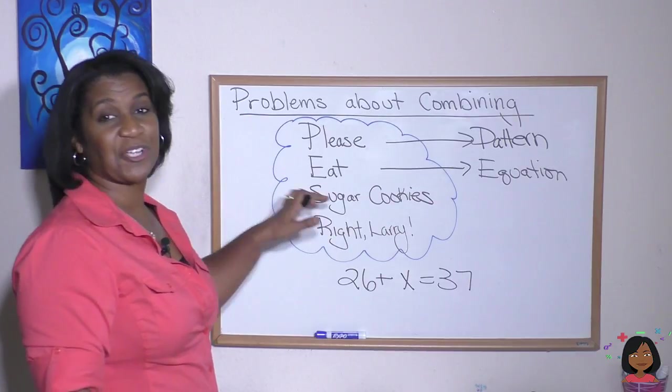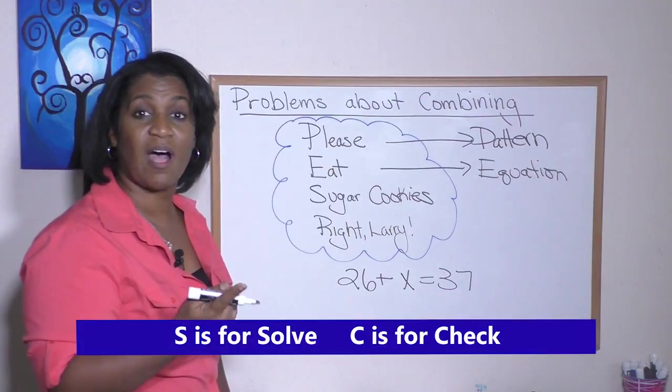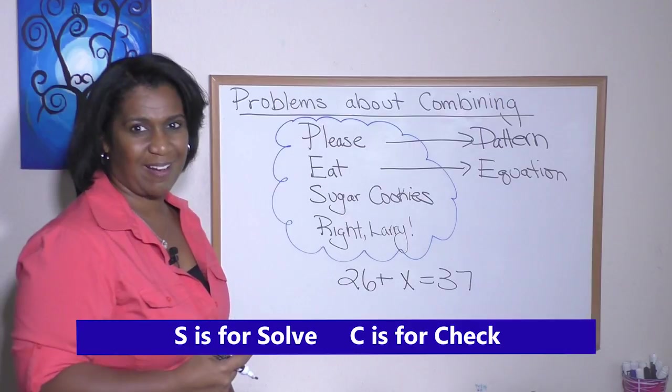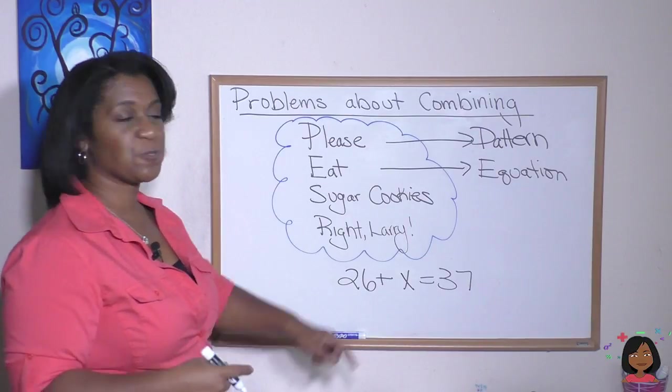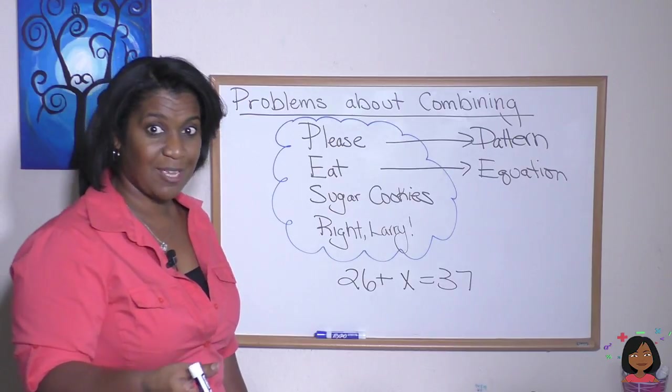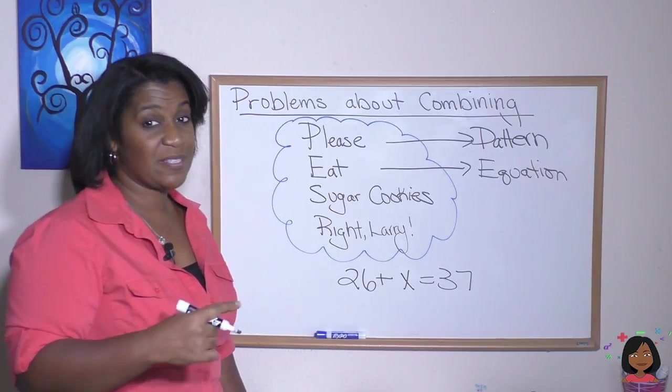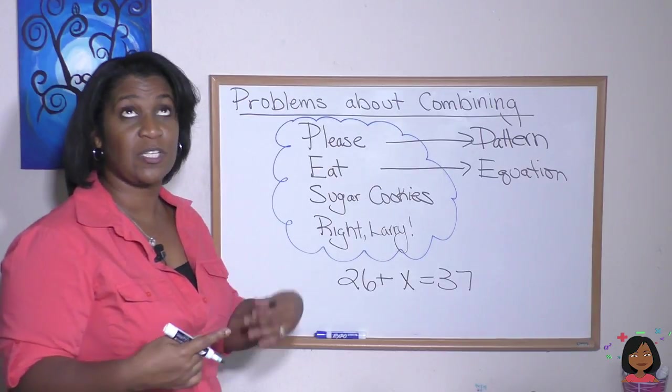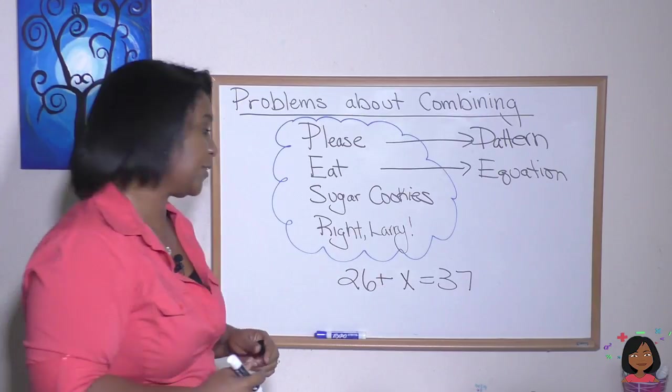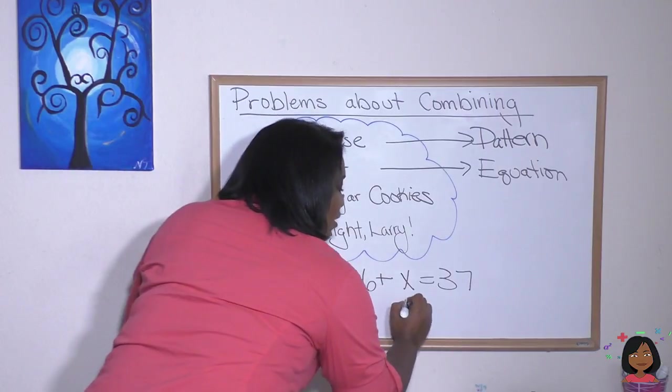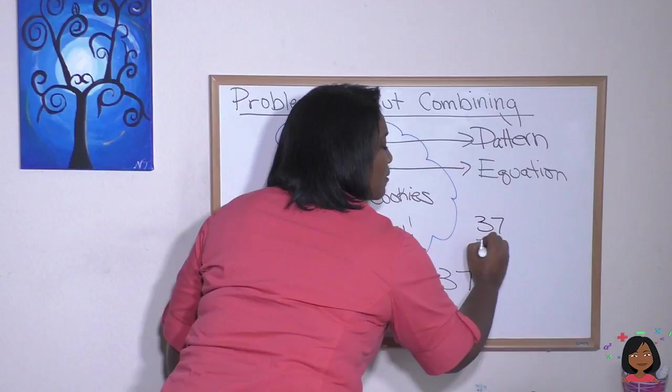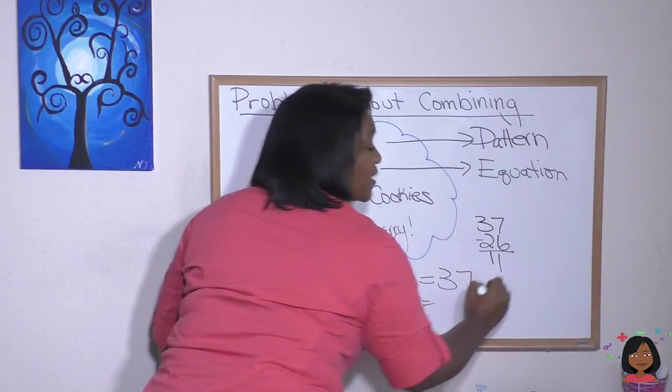The sugar cookies stands for solve and check. So now we're going to solve our equation and then we're going to check our answer. So 26 plus X equals 37 is a missing problem in addition. And you know how to do that. A missing problem in addition means, or missing number in addition means that we're going to use the opposite. We're going to use subtraction to find the answer. So our answer is going to be 37 minus 26, which is 11.